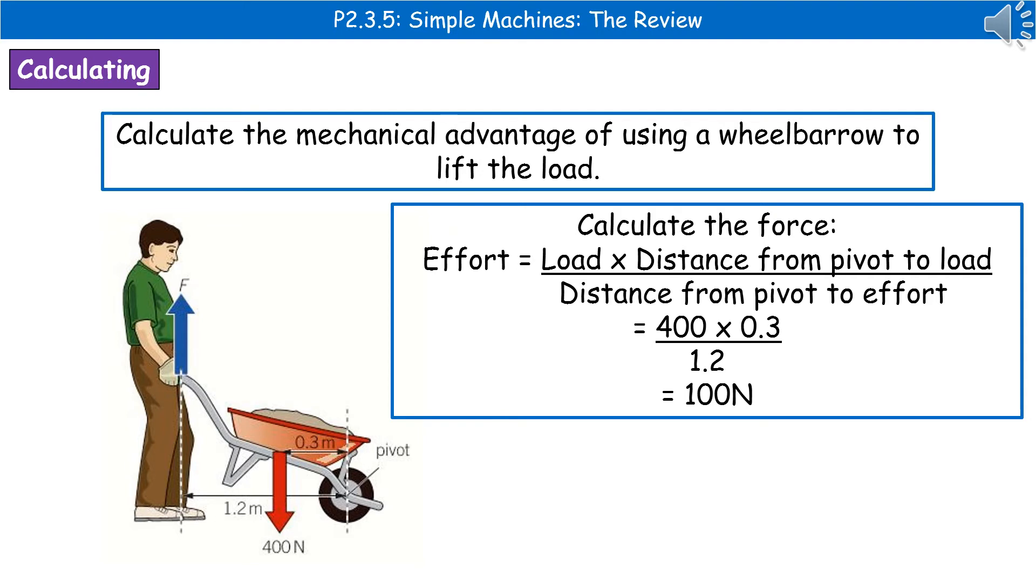So looking at our diagram, our load is 400 newtons. We times that by our 0.3, which is the distance from the pivot to the load. And then we divide that by 1.2, which is the distance from the pivot to the effort. And that gives us our effort of 100 newtons.